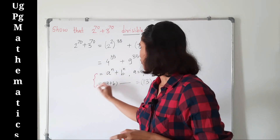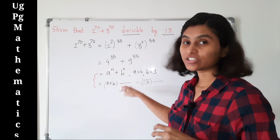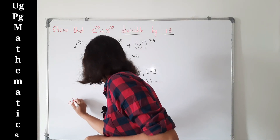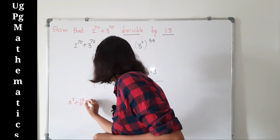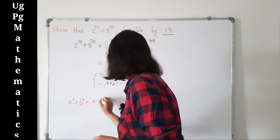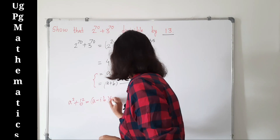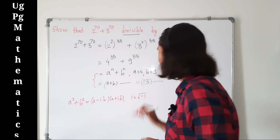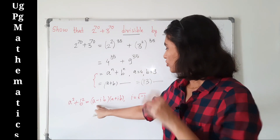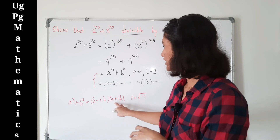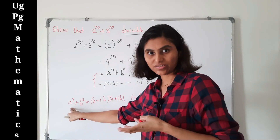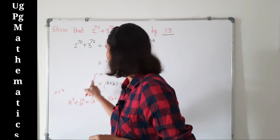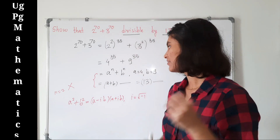But there are some conditions on n — we cannot write this factorization for all n. Let's explore them. Suppose n is equal to 2: then a squared plus b squared equals (a minus ib)(a plus ib), where i is the complex number square root of negative 1. Here we cannot get (a plus b) as a factor of a squared plus b squared, so for n equal to 2 this approach does not work.